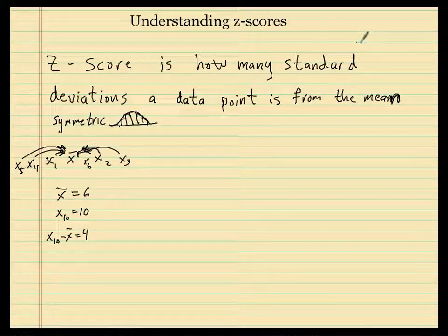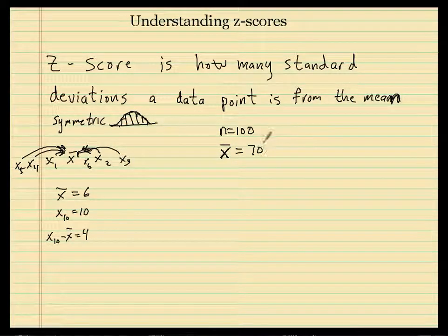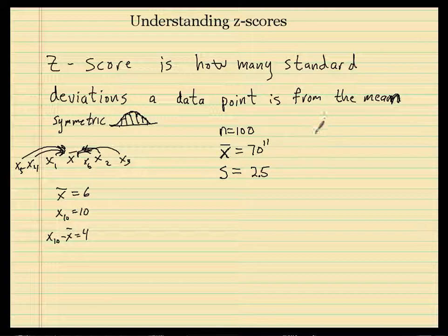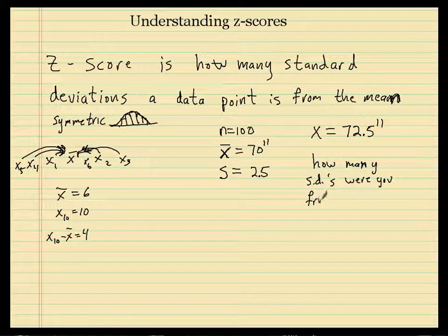A lot of people look at the definition — how many standard deviations a data point is from the mean — and don't quite get it. Let me explain it a little more. Let's say I take 100 data points and get heights in a school. Let's say the average of these 100 boys was 70, and the standard deviation — the typical distance all these people were away from there — was 2.5. And let's say you came in and they measured you, and your height was 72.5 inches.